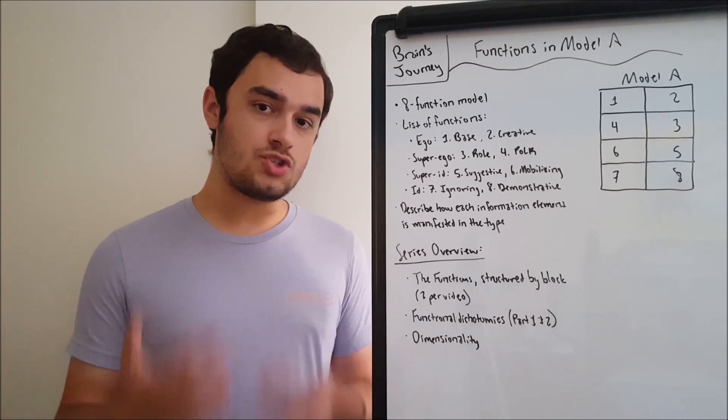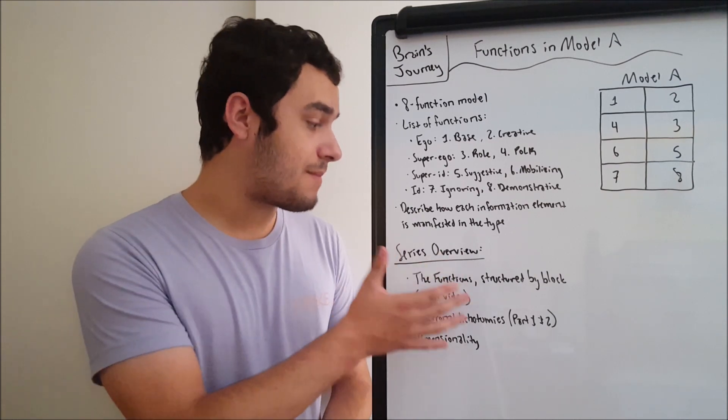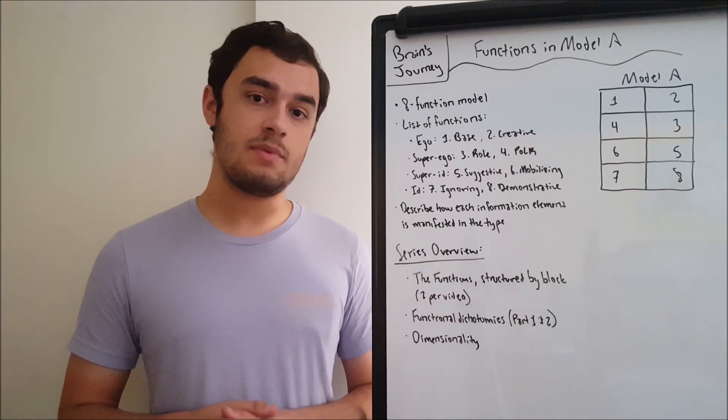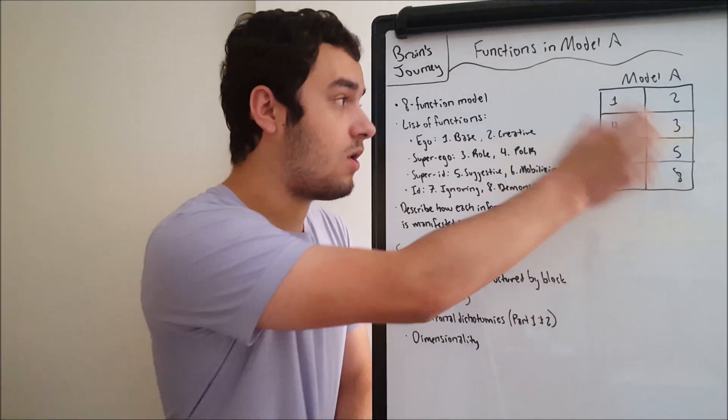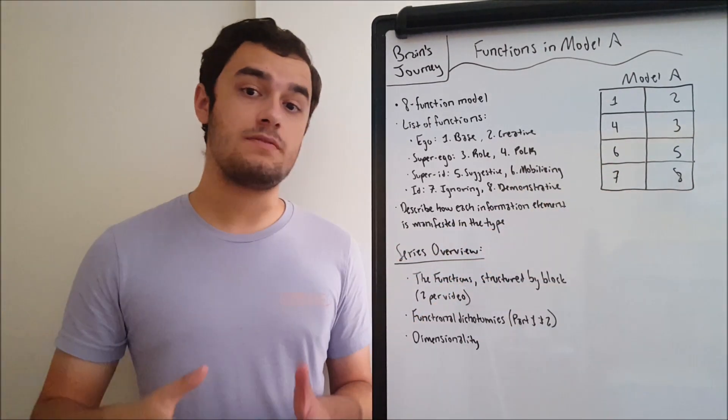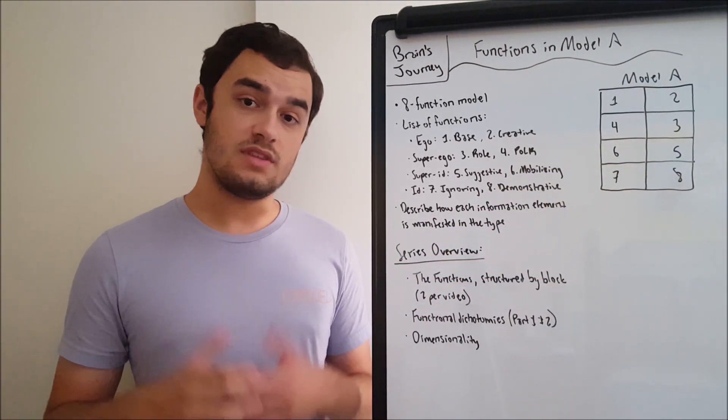The functions are just generally describing how each information element is manifested in the type. We want to put all eight information elements into all eight different slots to form different types. That's the premise of the theory.